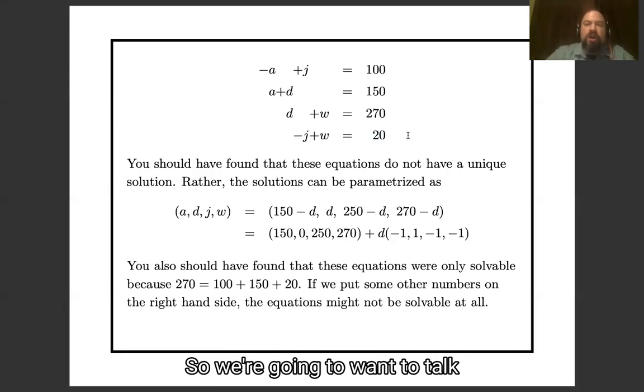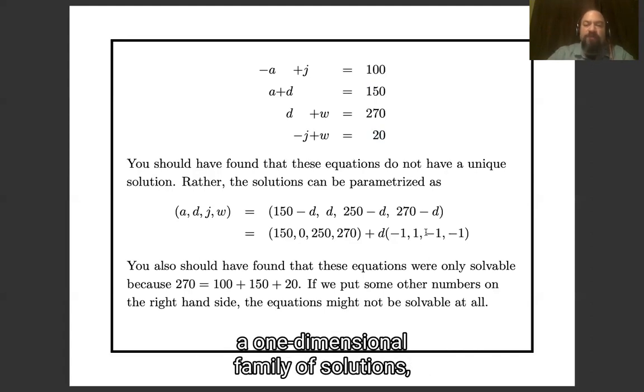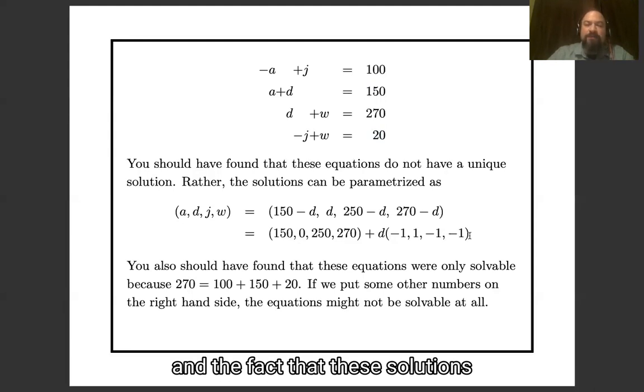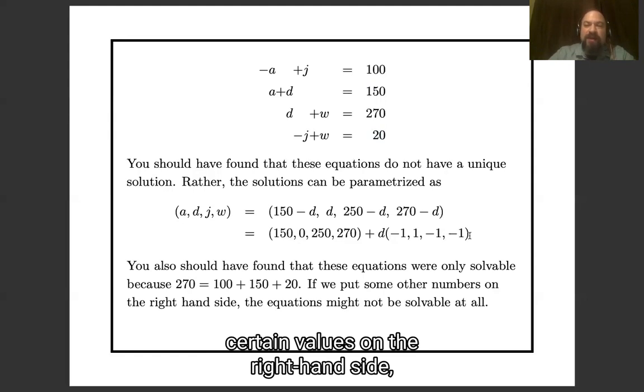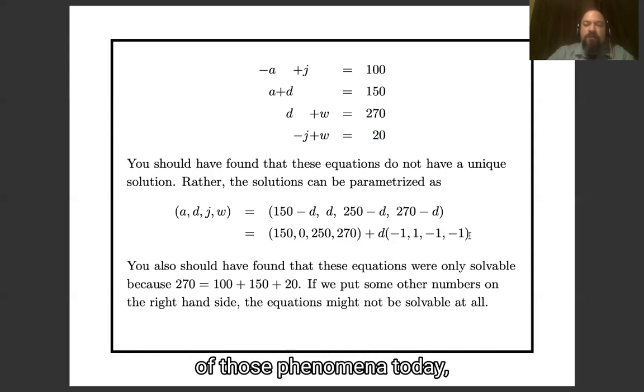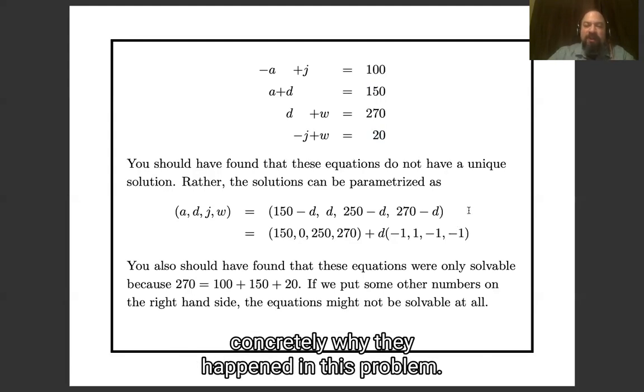So we're going to want to talk about both these phenomena, the fact that there was a one-dimensional family of solutions, and the fact that these solutions were only solvable for certain values on the right-hand side. We're going to want to talk about both of those phenomena today, but before we do, let's just see concretely why they happened in this problem.